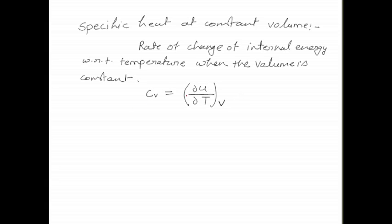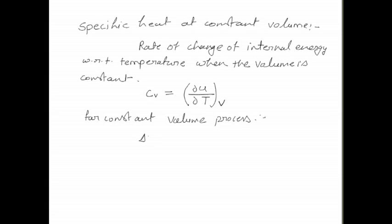So this will be the formula of specific heat at constant volume. We can write this for a constant volume process as δU = Cv dT. And if we are taking the temperature limit from T1 to T2, it will be the integration from T1 to T2 of Cv dT.